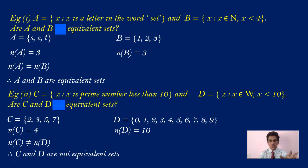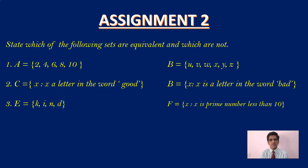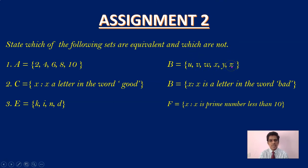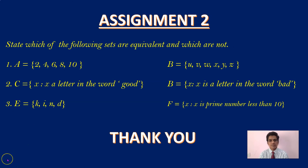To check if two sets are equivalent, you have to find the cardinal number of both sets. If the cardinal numbers are equal, the two sets are equivalent; otherwise they are not. This is your second assignment for today — three problems asking whether the sets are equivalent or not. Post the answers as early as possible. Thank you.